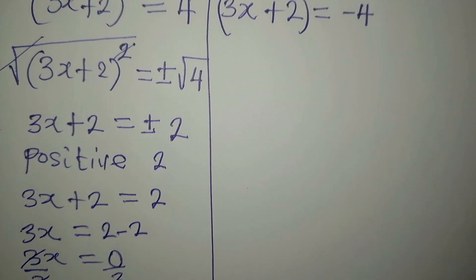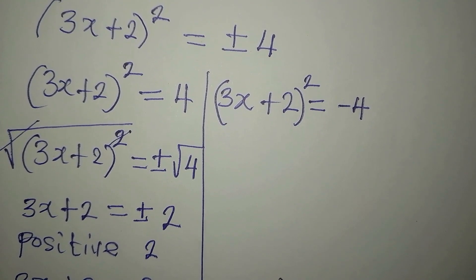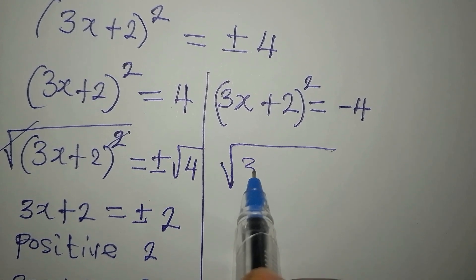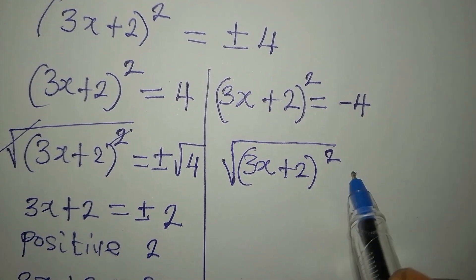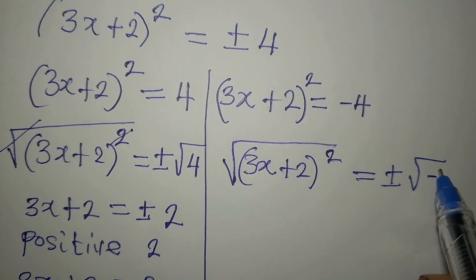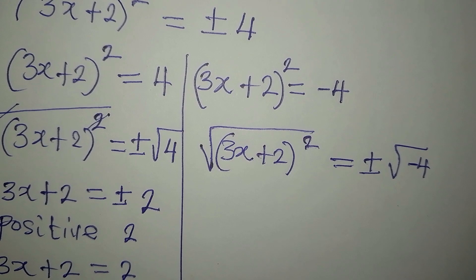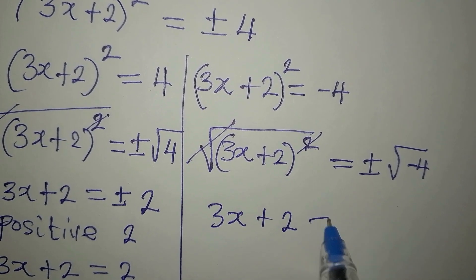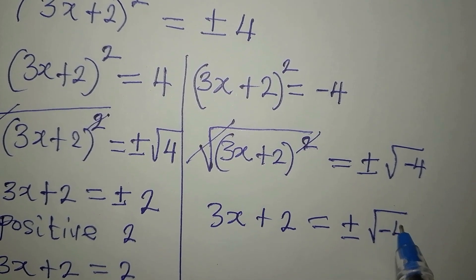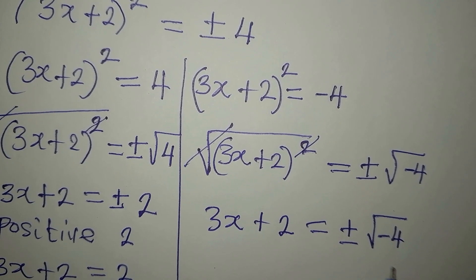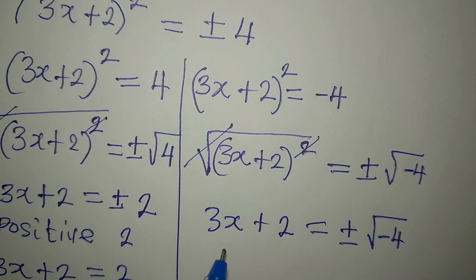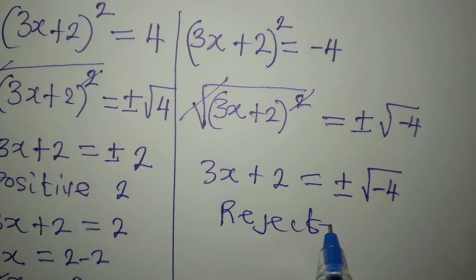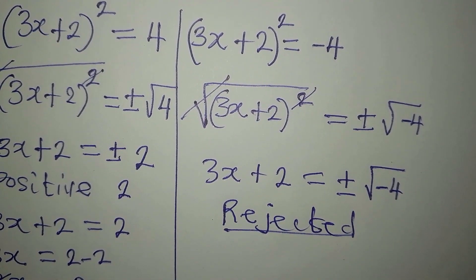Going back to the equation (3x + 2)^2 = negative 4, we take the square root of both sides to get 3x + 2 = plus or minus the square root of negative 4. Since the square root of a negative number does not yield a real solution, any values of x from this equation must be rejected. We are looking for only real solutions.